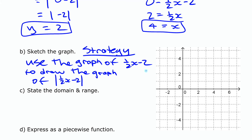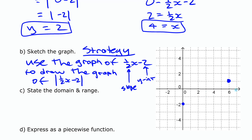Assuming you've seen linear functions before, you know that negative 2 is the y-intercept and ½ is the slope of that straight line. So we have a y-intercept of negative 2 and a slope of ½, going one up for every 2 across. I'm going to draw it as a dotted line because it's not actually the function itself — it's just what we're using to construct our absolute value function.